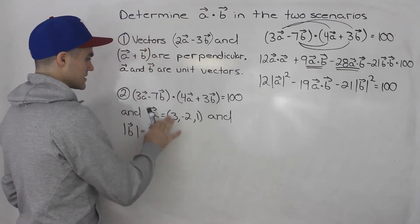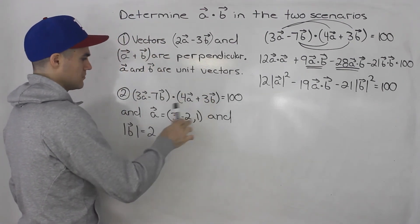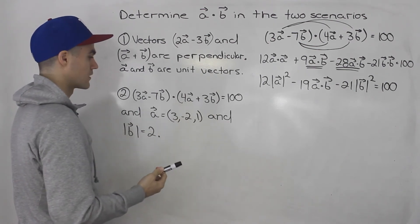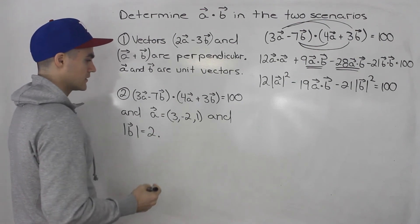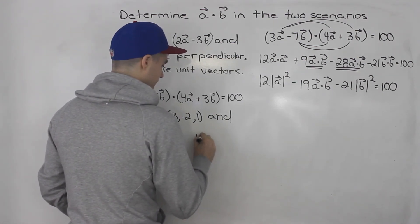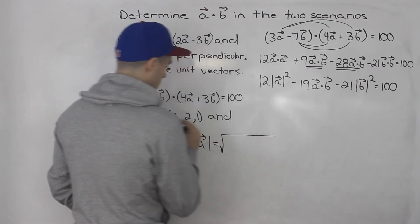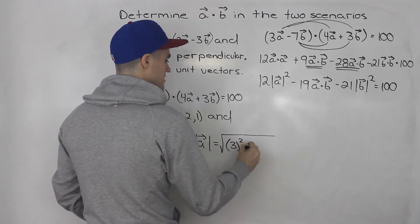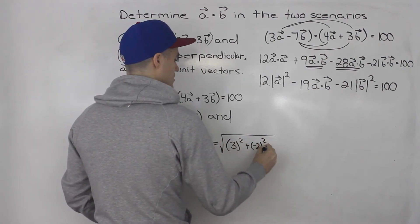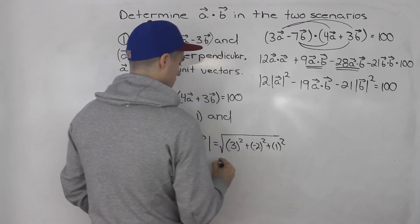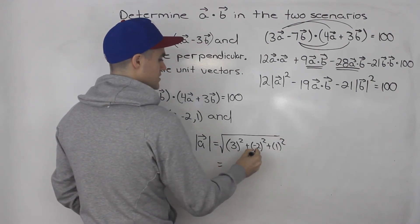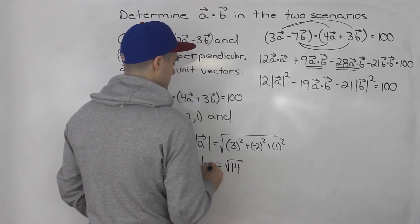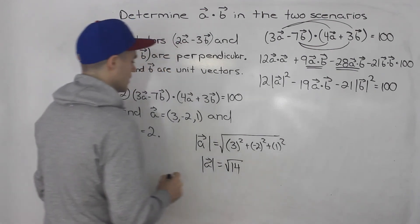We're given the magnitude of b, but for the magnitude of a we need to compute it from the component form. To find the magnitude of a, we take the square root of the sum of components squared: root of (3 squared plus negative 2 squared plus 1 squared) equals root of (9 plus 4 plus 1) equals root of 14.